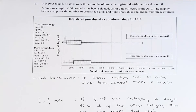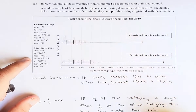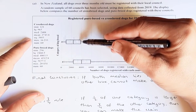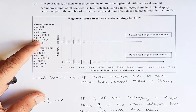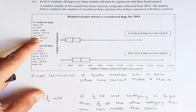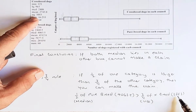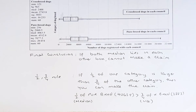In our case, half of the purebred dog — the median — is 4,063.5. The upper quartile (75%) of the crossbreed, which is 3,883, is used as the three-quarter benchmark. Since 4,063.5 is bigger than 3,883, we can conclude that the number of registrations for purebred dogs is more than for crossbreed dogs, because half of the purebred is more than three-quarters of the crossbreed registration.